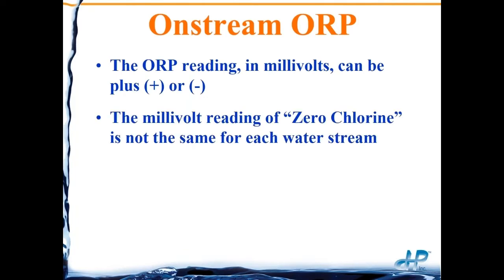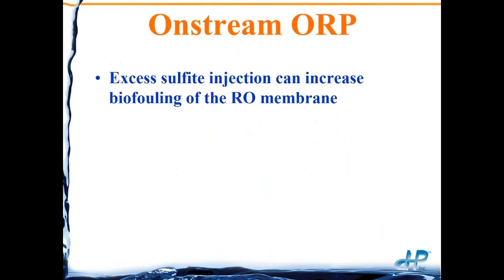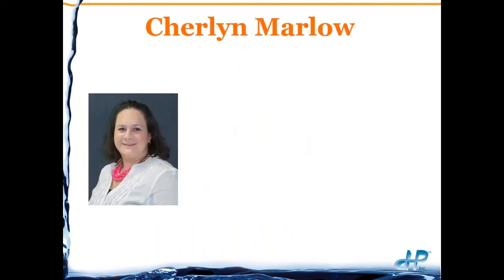As Sherlyn will go over, we're talking about millivolts plus or minus. It can be a challenge with different waters to find exactly where zero chlorine is. Most of the time we like to overfeed sulfite to be absolutely sure we don't have any oxidation of the membrane, but excess sulfite can also cause biofouling issues. So we want zero chlorine and just a small excess — maybe half to one part per million of excess sulfite. It takes a little trial and error to find the right millivolt reading at your plant.